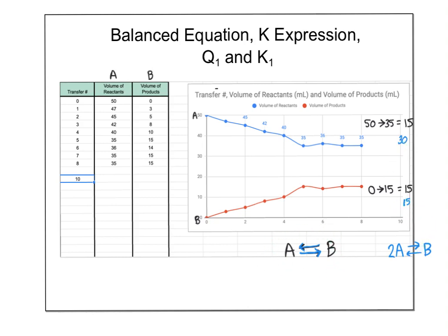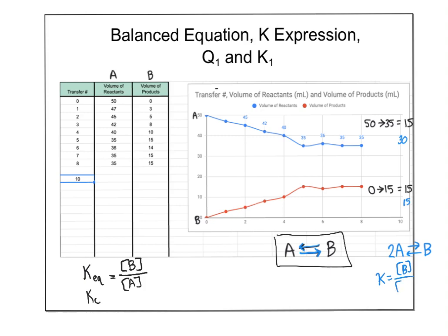Since they changed the same amount, my equation is A to B. Now let's write the K expression. K-eq — or K-C, or just K — equals the concentration of the products divided by the concentration of the reactants. If your equation were 2A to B, it would be concentration of B over concentration of A squared. And if yours was something like 6A makes B, you'd have A to the sixth. Don't panic if your coefficients are much bigger than mine — I made up my numbers to be a nice one-to-one ratio.